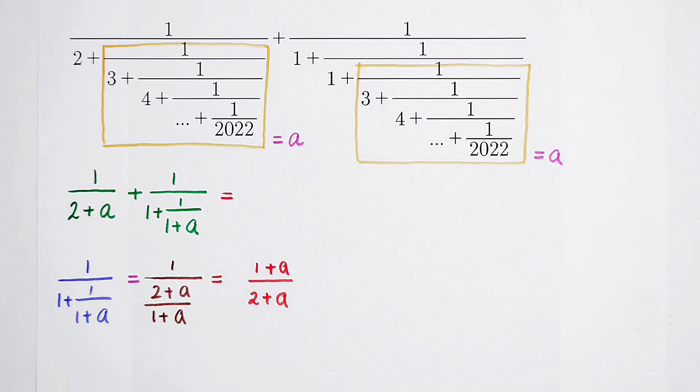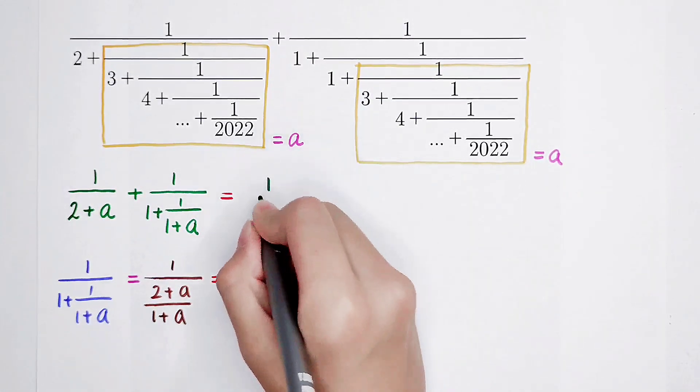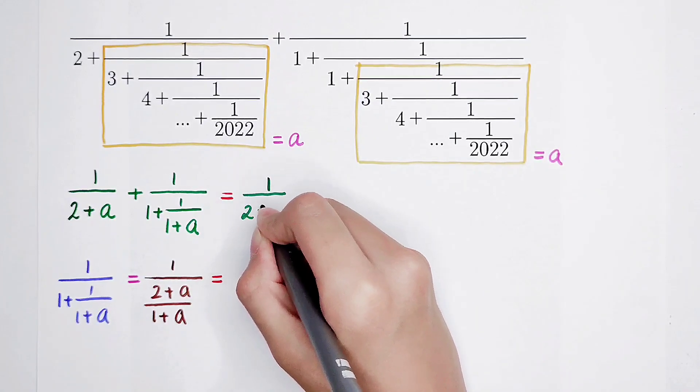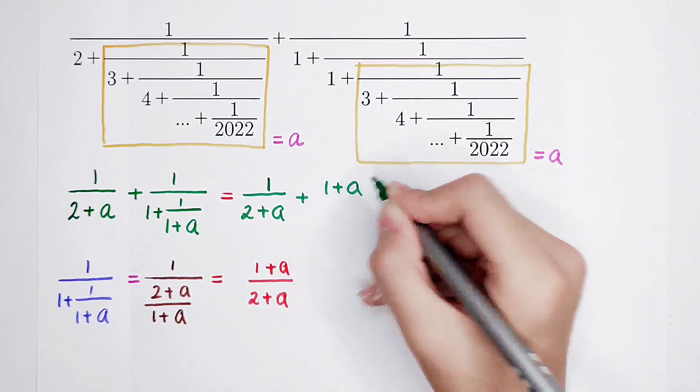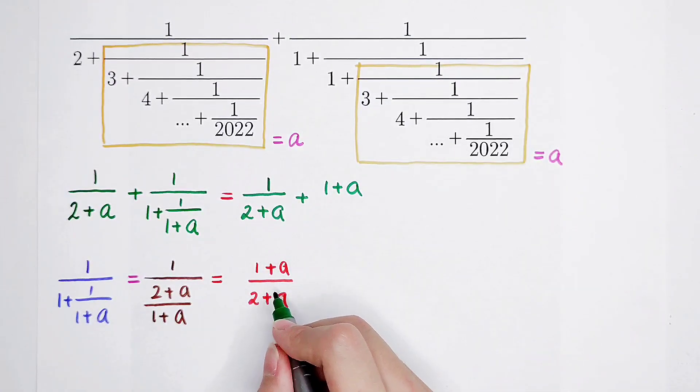I think here is a little far. So this is just equal to 1 over 2 plus a, and then plus. This is the easiest fraction I think. It cannot be simplified anymore.